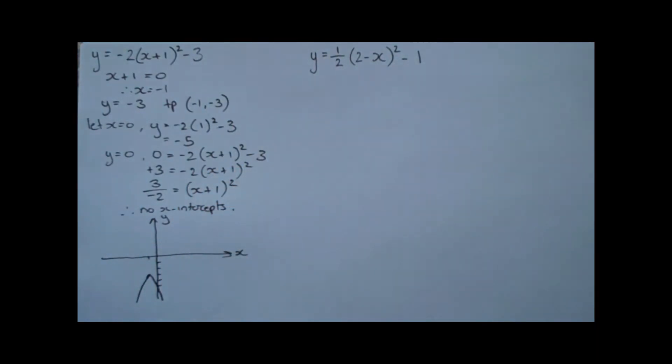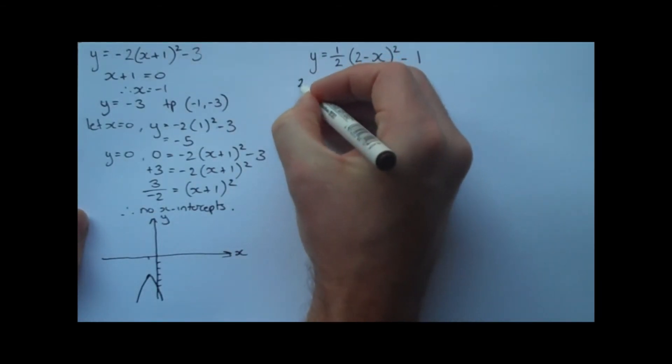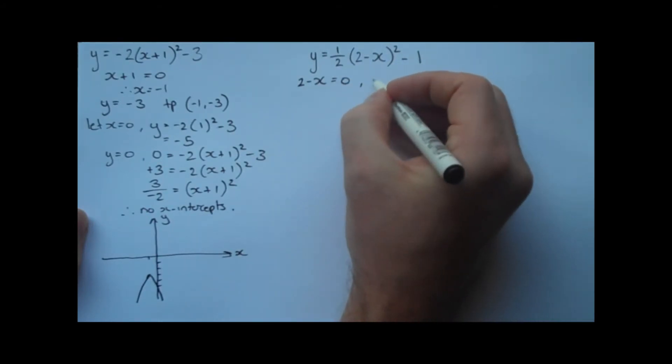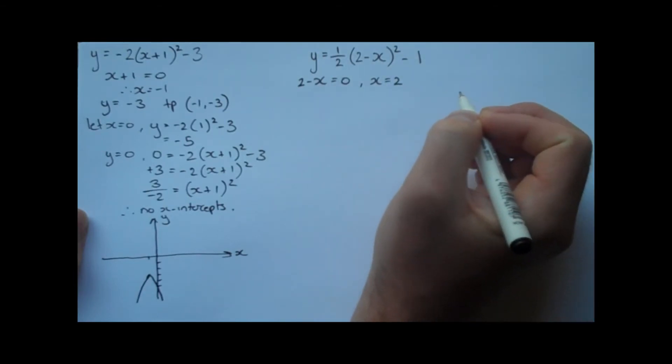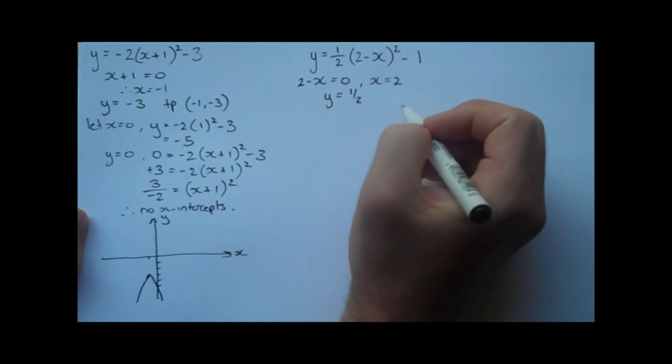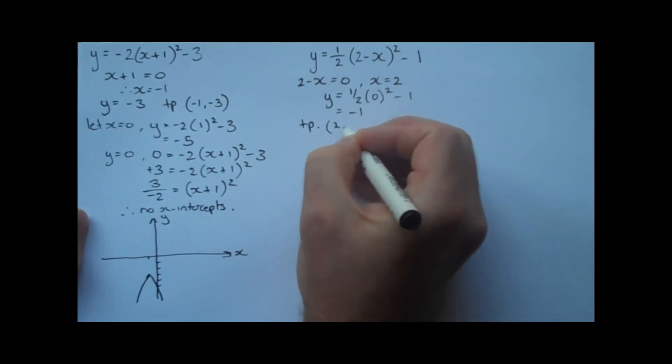Okay, so moving on to the second example we've got there. y equals a half (2 - x)² - 1. We go through the same steps. We want to find the location of the turning point. So we'll let the bit inside the bracket equal zero. So we get 2 - x equals zero. And then solving, we get x equals two. Substituting this back into the equation to find y, we'll get y equals a half multiplied by zero squared, take one, which we know is just going to be negative one. So the location of the turning point is (2, -1).